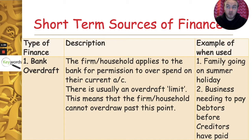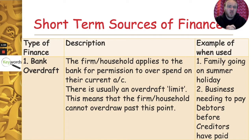Here are some examples of short-term sources of finance. Bank overdraft — that's when you have a minus amount in your bank current account. You need to get permission and there's usually a limit, a maximum amount. You might get an overdraft, for example, if your family is going on holidays, or if the business needs to pay people it owes money to.